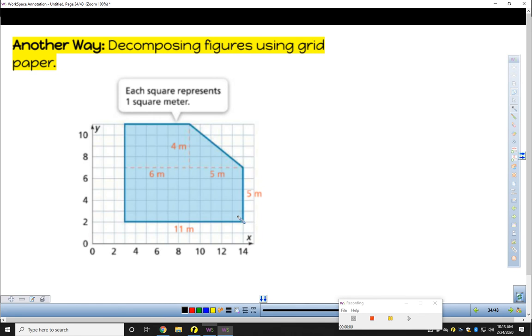Notice here they've already kind of broken it up for us. I've got rectangle 1, rectangle 2, and triangle 1. I've only got one of those. Decompose it and then find the area of each piece.